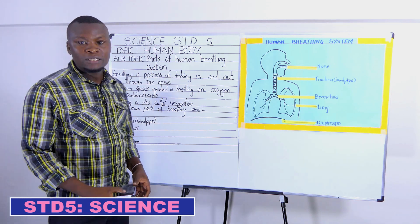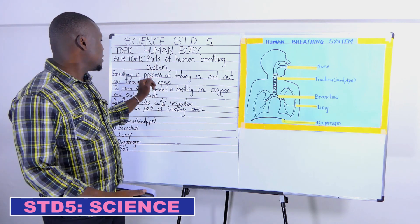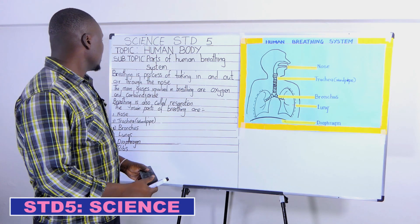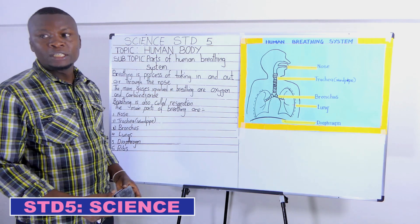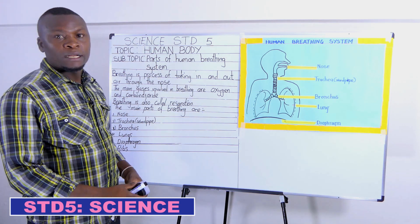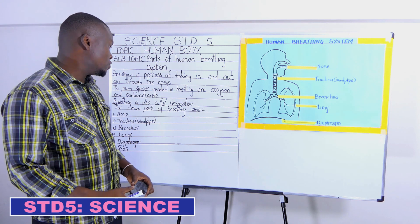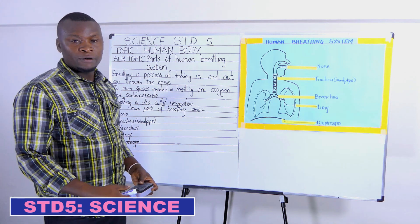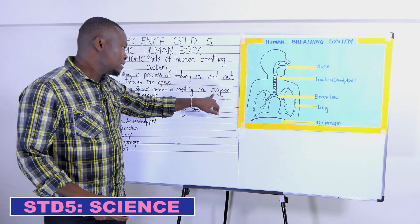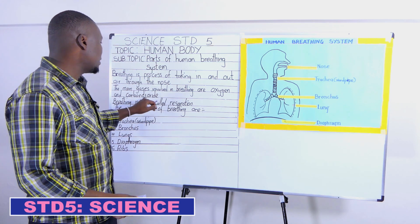As we know, we are human beings and we breathe in air and we breathe it out. The process of breathing in and out air is called respiration. For us to have our body functioning normally, we must breathe in clean air and remove the air that has been used in our body. This air that comes out of our body is our waste gas known as carbon dioxide. In breathing, we have two gases that are involved: oxygen and carbon dioxide. We breathe in oxygen and we breathe out carbon dioxide.